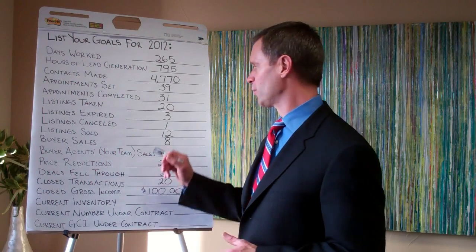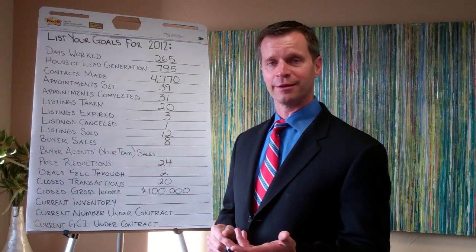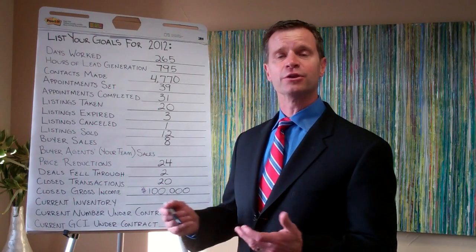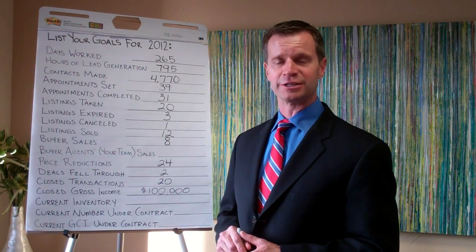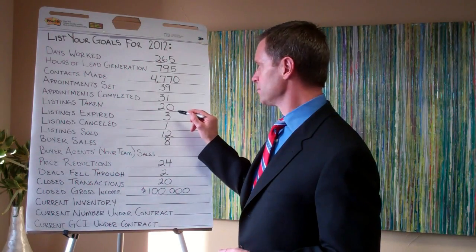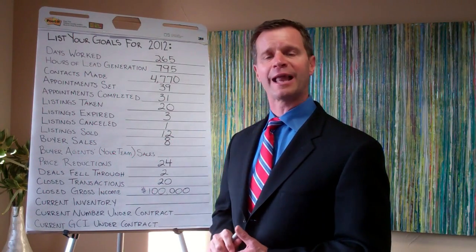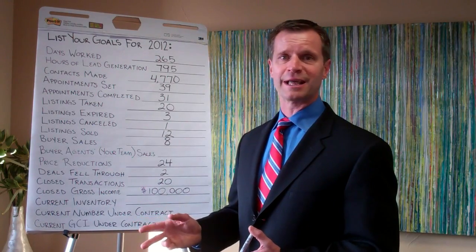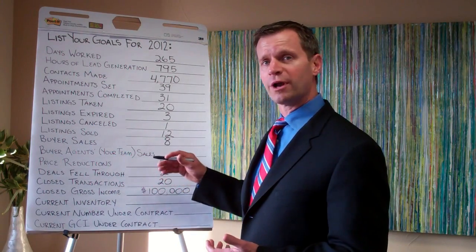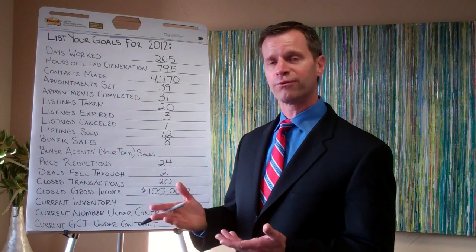Now that we know 12 are the listings we're going to sell, the next thing we look at is how many listings you need to take in order to get to 12. We determine that by looking at your rate from last year — let's say you sold 60% of the listings you took. So that number is going to be 20. And looking at expires and cancels, let's say in 2011 you had two listings expire, none that canceled, and one deal that fell through. As you increase your goal, we'll pump up those numbers a bit since your chances for fallout will increase.